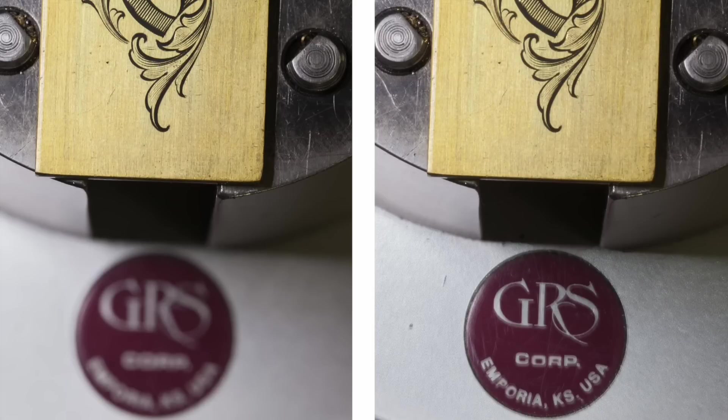Here's a depth of field simulation of what you can expect with the scope at its lowest power. The image on the left is similar to what I see through my Zeiss microscope and the image on the right is similar to what I see through my Leica. Both microscopes are focused on the engraved brass plate, which is about an inch and three-quarter or 4.5 centimeters above the red GRS logo. As you can see with the Leica, the logo and the engraved plate are both in sharp focus.